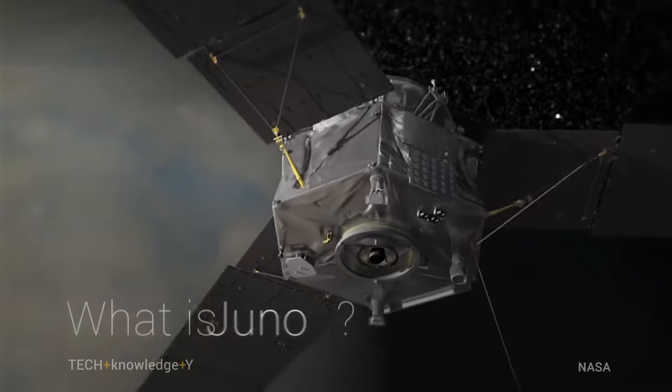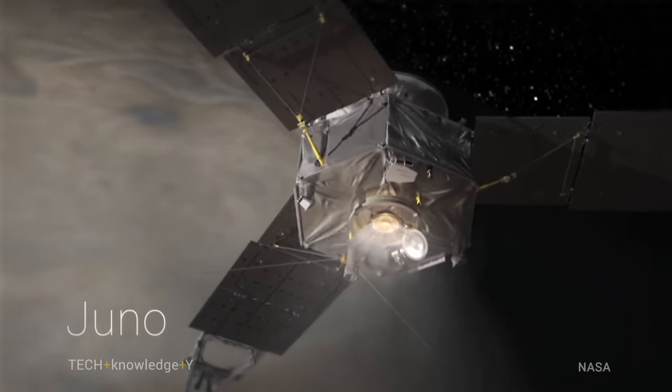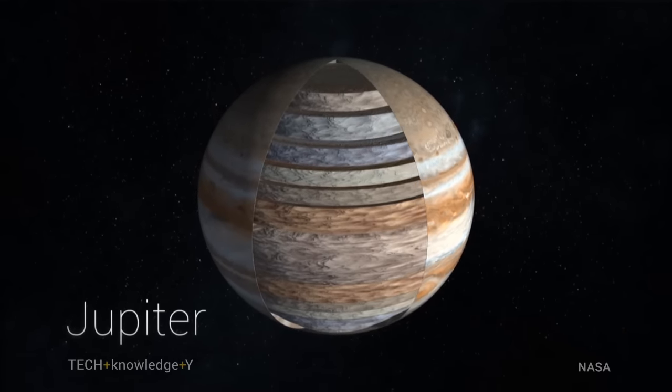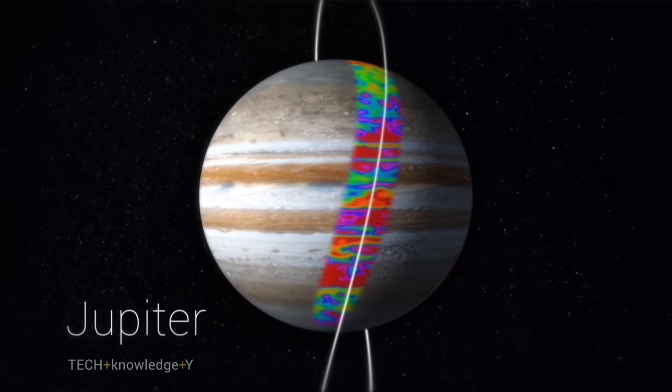What is Juno? Juno is a spacecraft that's going to go into orbit around Jupiter on July 4th this year. It will provide us with insight into the structure of the core, the structure of the atmosphere, and it will also tell us about the radiation surrounding the planet Jupiter.